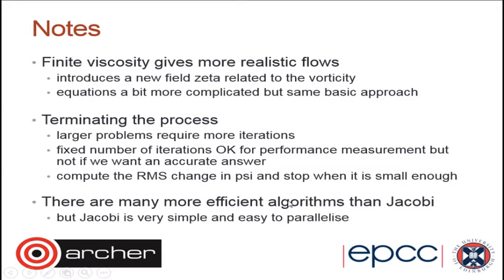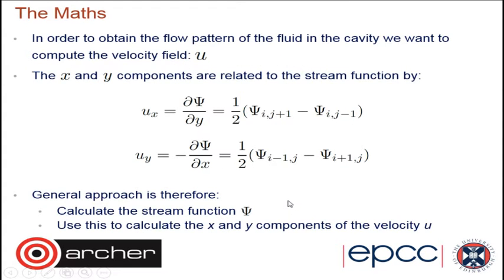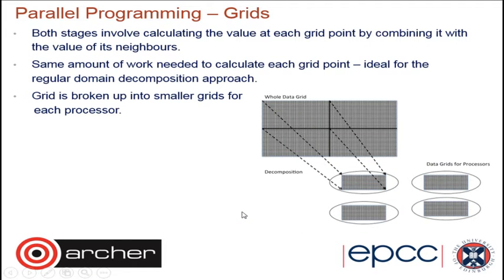There are more efficient algorithms, but Jacobi is very simple and easy to parallelize. You can compute the velocity of the flow directly from the stream function. In discrete terms, it's a combination of the two neighbors in x and y. So the general approach implemented in the code is that it calculates the stream function psi for all grid points, and then calculates the velocity field in x and y for all grid points.